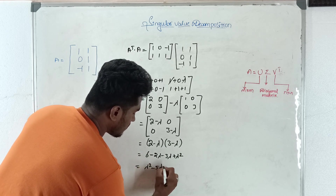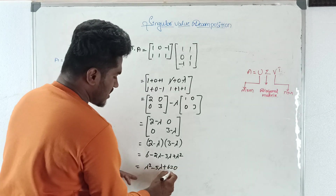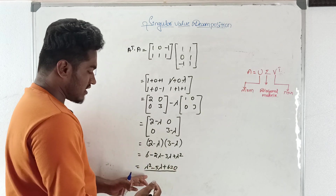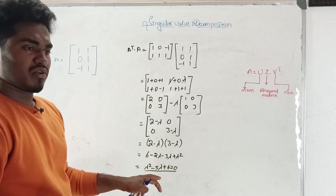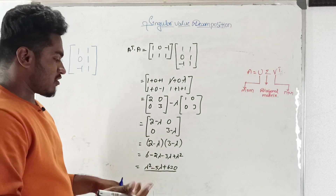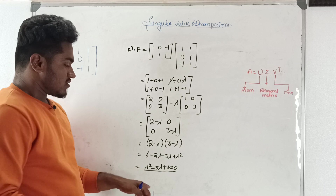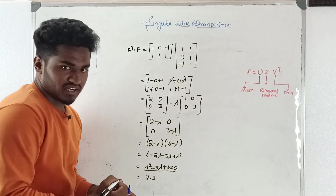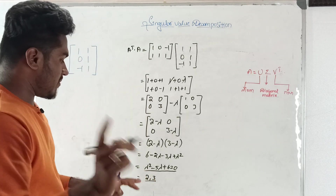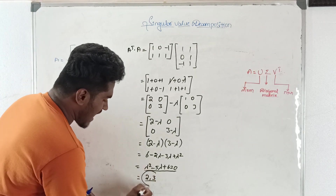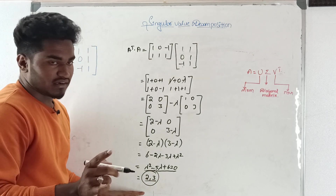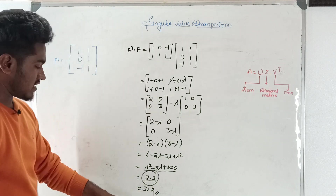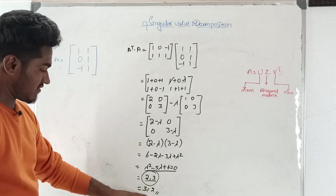Solving the characteristic equation λ² - 5λ + 6 = 0, either by factoring or the quadratic formula, we get eigenvalues λ = 2 and λ = 3. These values must be written in descending order — from largest to smallest — so we take λ₁ = 3, λ₂ = 2.